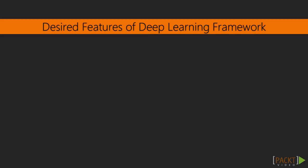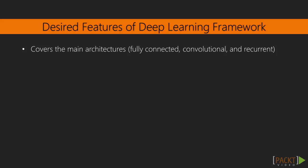So here are the desired features. It is important to ask at least the following questions when choosing a deep learning framework. Does it provide the main architectures, like fully connected, also called multi-layer perceptron networks? Do they have convolutional layers, those that are important for image processing?